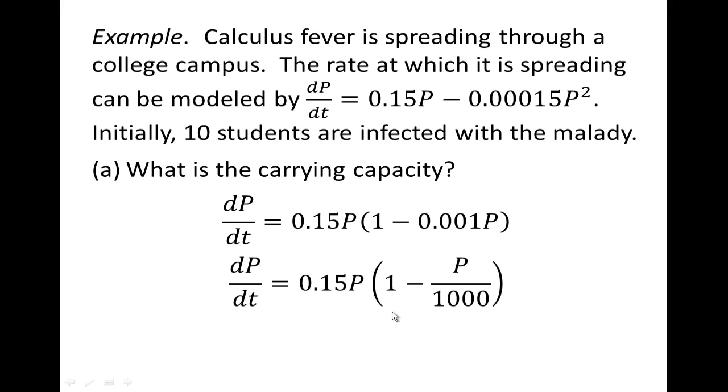Now this is easily read off. Remember it was k times p times 1 minus p divided by m, which was the carrying capacity, so our carrying capacity is 1,000 students, the maximum number of students who will be infected.